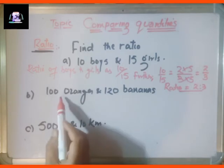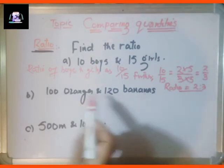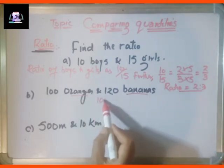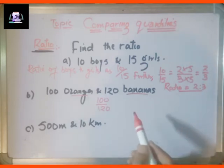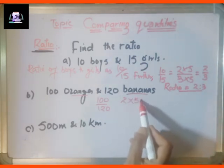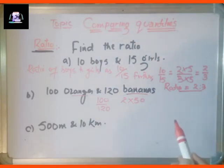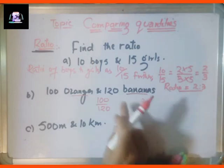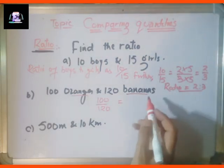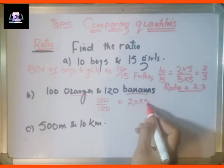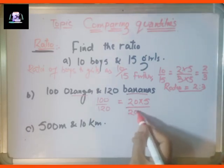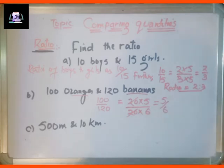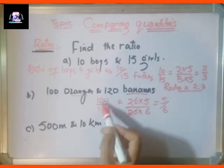Now, what about 100 oranges and 120 bananas? The ratio of oranges to bananas is 100 divided by 120. We find a common factor: twenty fives are 100 and twenty sixes are 120, so canceling the 20s gives us 5 by 6.